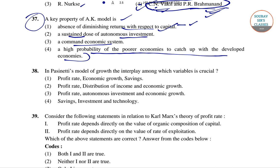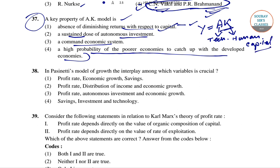The simplest version of the production function without diminishing returns is the AK function, which is Y equals AK, where A is the positive constant that reflects the level of technology and K is capital. The global absence of diminishing returns may seem unrealistic, but the idea becomes more plausible if we think of K in a broad sense to include human capital. So for question 37 the right answer is option 1.